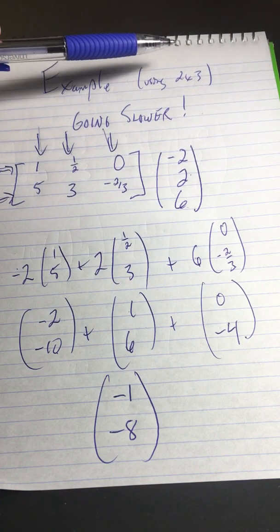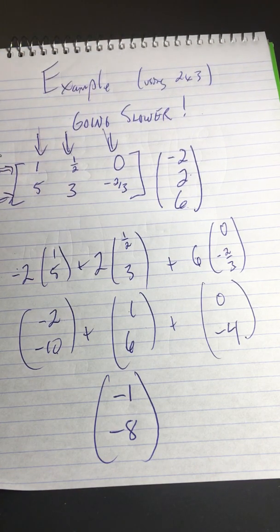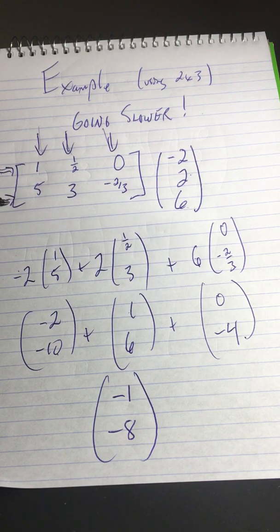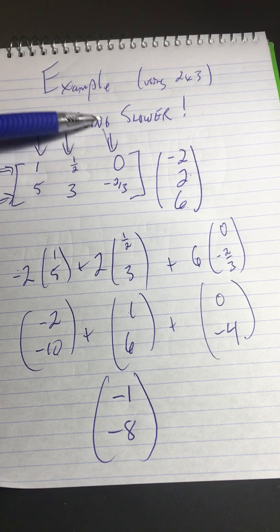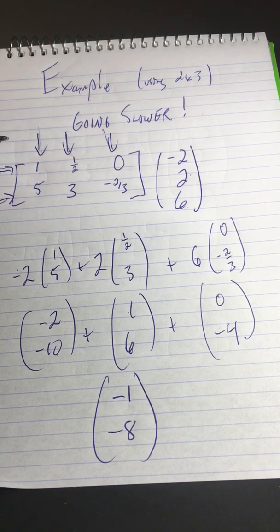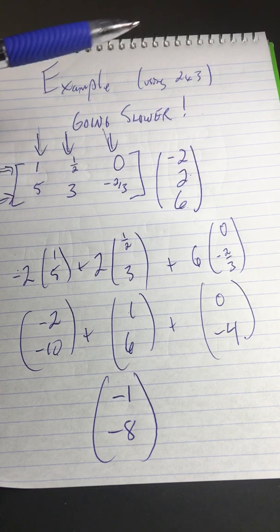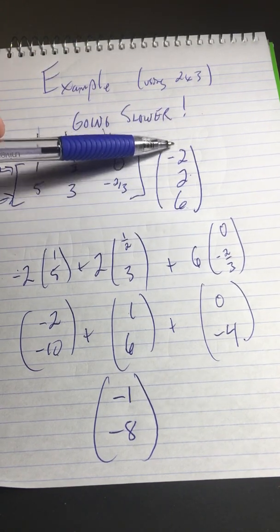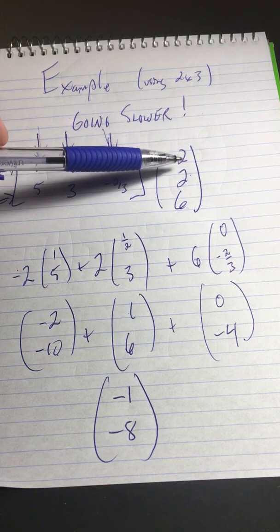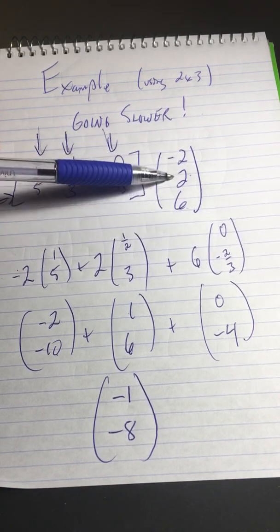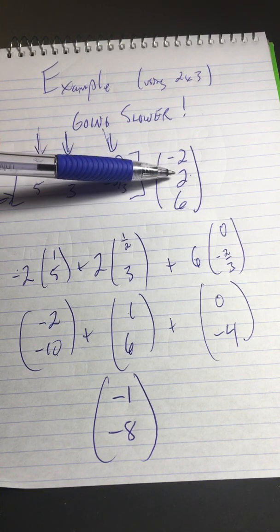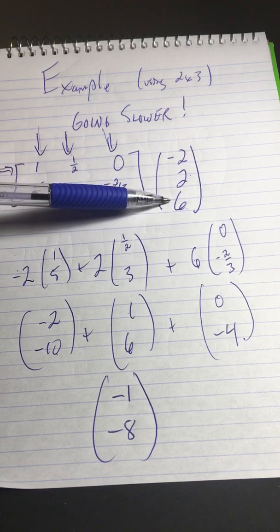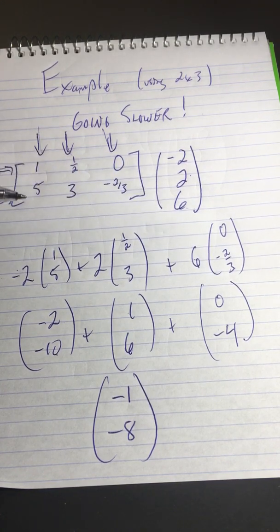Everybody says I'm going too fast, so I'll slow down. Here's an example using a 2 by 3 matrix. Two rows, three columns. So we have three columns. That means we need to go from 3-space to 2-space. So that means I need a 3-space vector over here. So the input has to have three entries: 1, 2, 3, because this has to belong to three-dimensional space. You go over negative 2, then you go up 2, and then you go in the third dimension, 6.